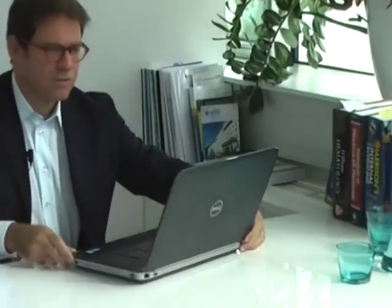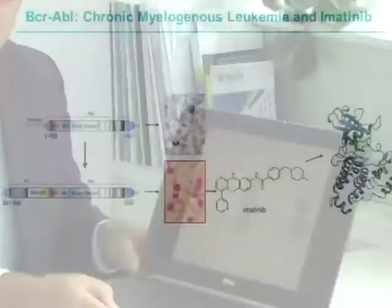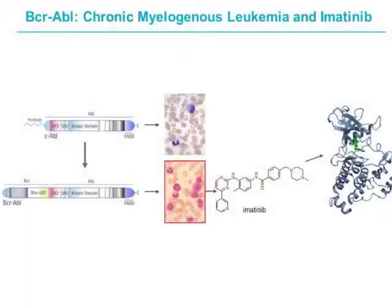Chronic myelogenous leukemia is a paradigm in disease research, as it is caused by a single event: a translocation of the BCR gene to the ABL gene, causing the famous BCR-ABL fusion protein shown here. This fusion protein contains an SH2 domain, an SH3 domain, a catalytic domain, as well as other portions.